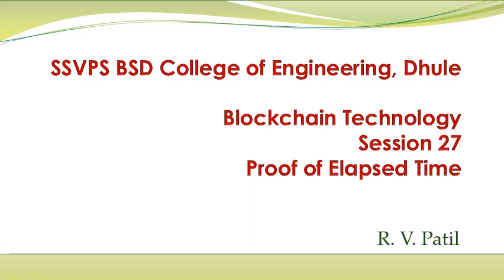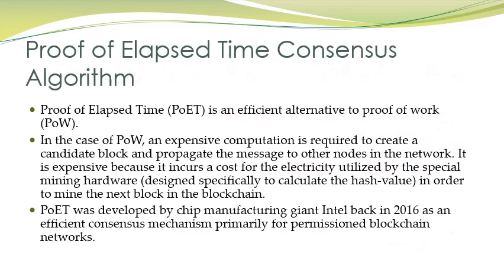Hello students, in this session we will try to learn the last consensus algorithm, that is Proof of Elapsed Time. So in previous sessions, we have studied Proof of Work, Proof of Stake, and Proof of Burn. And this is the last consensus algorithm that we have to study — Proof of Elapsed Time. This Proof of Elapsed Time is an efficient alternative to the Proof of Work consensus algorithm.